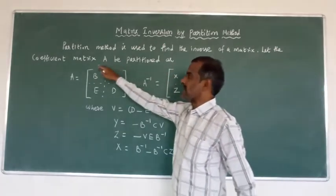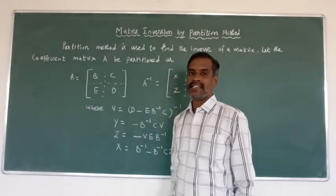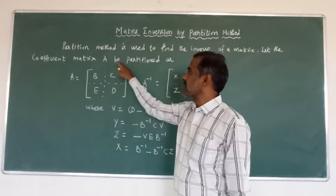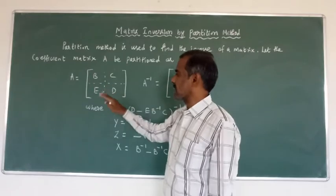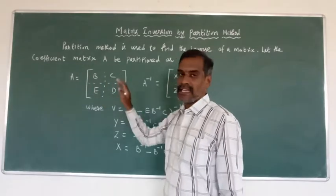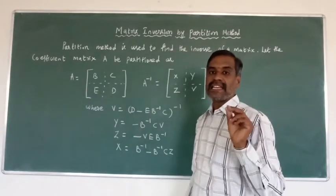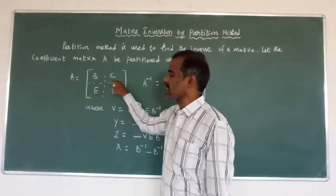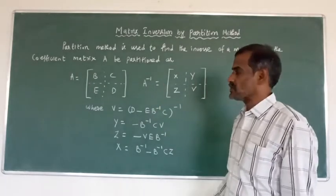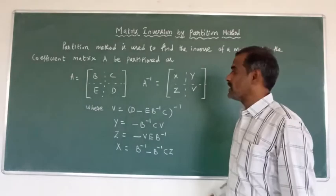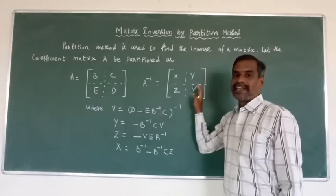Let the coefficient matrix A be partitioned like this: one part B, another part C, another part D, and another part E. Suppose that A matrix is a 3×3 matrix. We can partition like this. Now to find out the A inverse — inversion of matrix A — we write A inverse equal to X, Y, Z, V, partitioned like that.